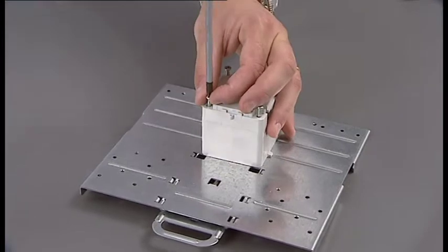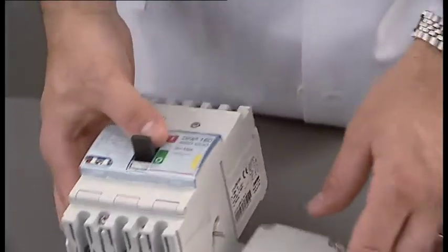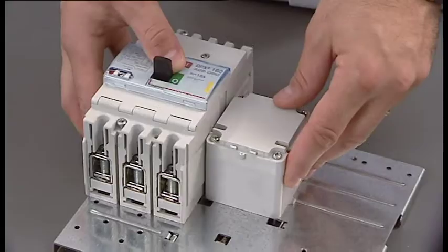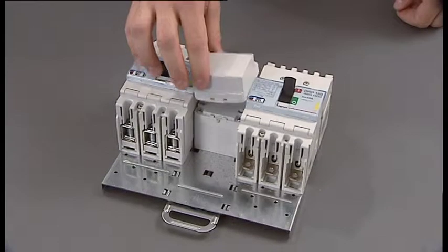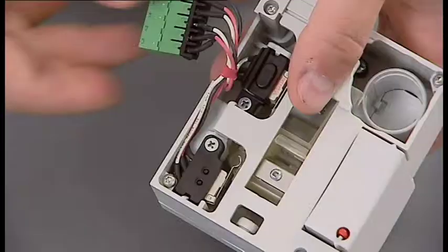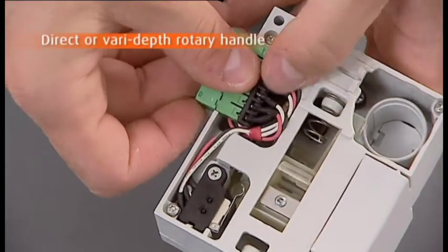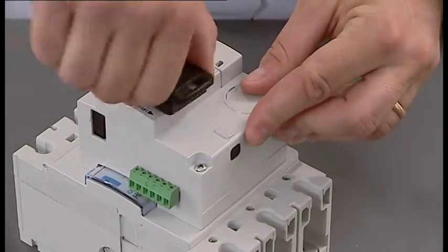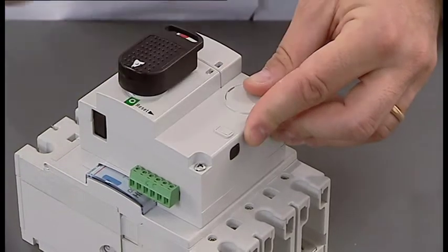Assembling supply inverter type MCCBs is extremely easy, thanks to the mounting and interlocking plate for two breakers. The direct or varied depth rotary handles are very easy and simple to install.